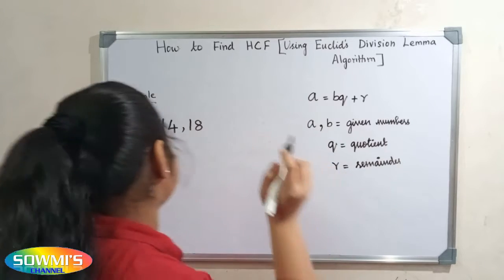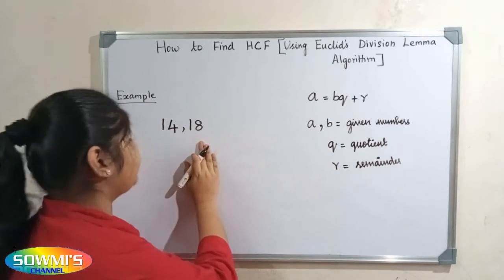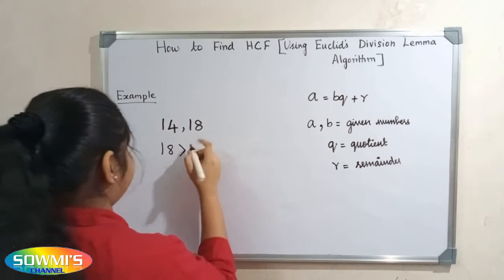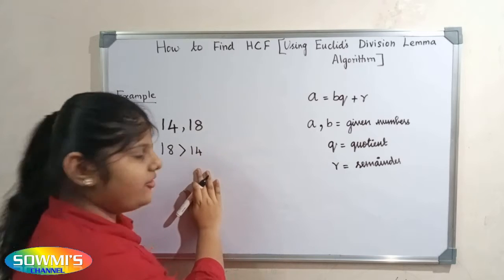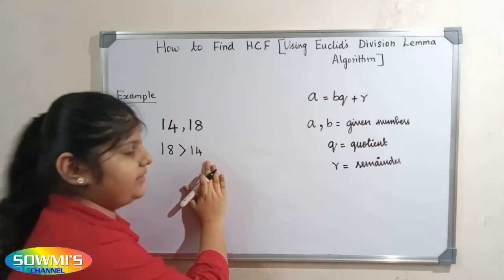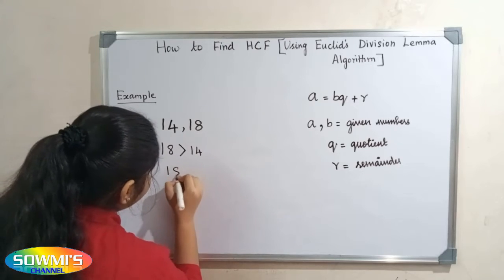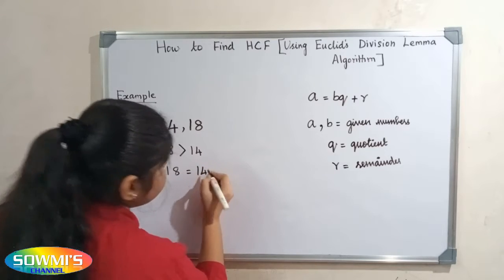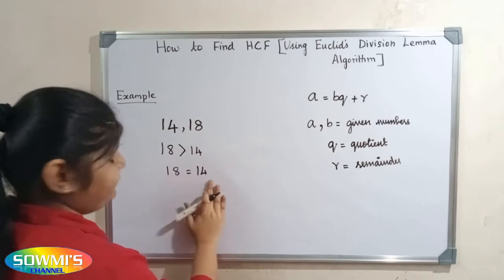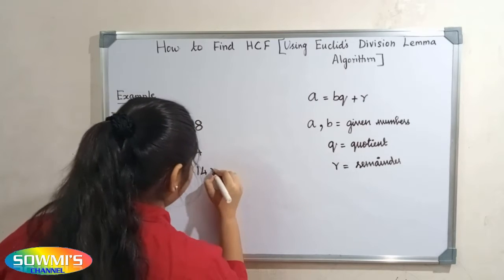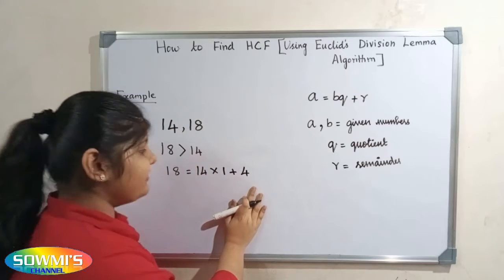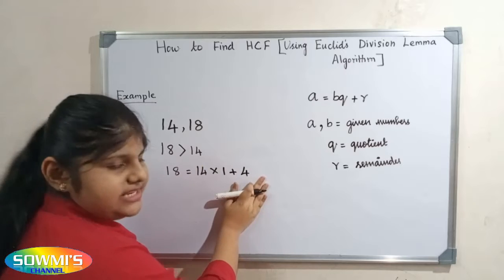Now we will find the greatest number. Here the greatest number is 18, since 18 is greater than 14. We apply the formula by dividing the biggest number by the smallest. When we divide 18 by 14, our quotient will be 1 and our remainder will be 4. Now we have to repeat the process until the remainder is 0.